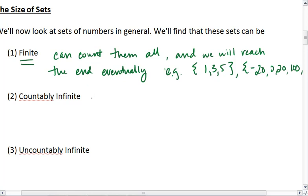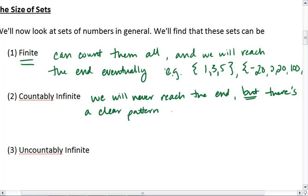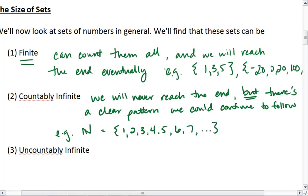Countably infinite means that we will never reach the end, but there's a clear pattern we could continue to follow. For example, our natural numbers are countably infinite. We can start with 1, or if it's a natural number plus 0, we could start with 0. But we can start with 1, and then 2, 3, 4, 5, 6, and so on. And we can continue on this pattern of always adding 1 to the previous number. So this is considered countably infinite.